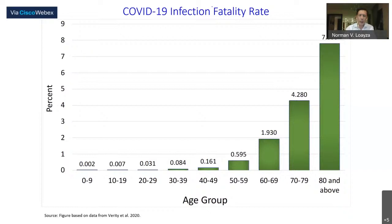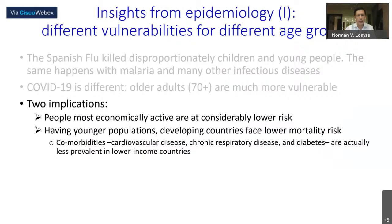The infection fatality rate changes quite significantly according to age group — increasing for people who are 60 or older and being really high for people who are 80 years of age and above. There are two implications. First, people who are most economically active and can actually work are at considerably lower risk, so if they take certain precautions, they could work at lower risk of contracting a severe case. At the macroeconomic level, having younger populations means developing countries face lower mortality risk.